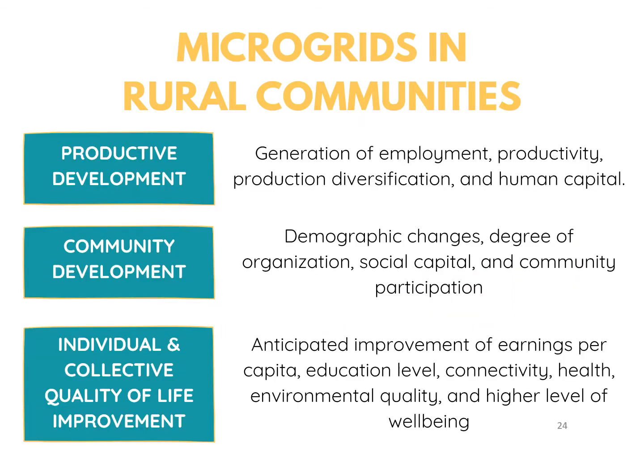Aside from the technical benefits provided by microgrids in rural electrification, it also produces social benefits linked to the local sustainable development of the community. We can generally classify this into three: productive development such as generation of employment, community development like increased social participation, and individual and collective quality of life improvement.